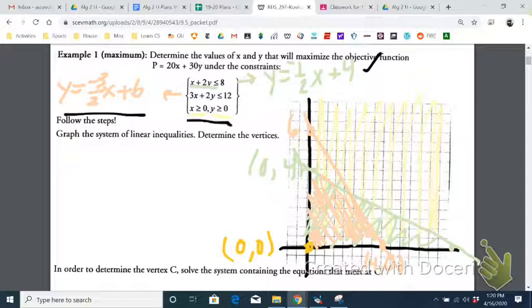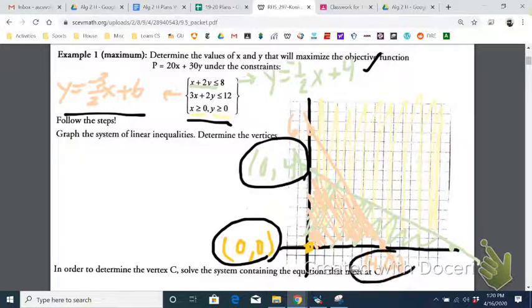And then if x and y are both greater than or equal to 0, that just means we're graphing in quadrant 1. So we have our three points, 1, 2, and 3.